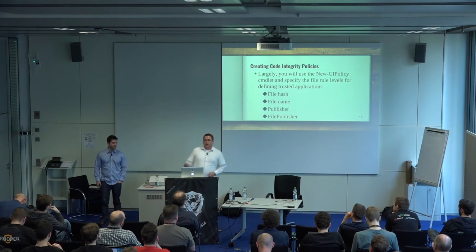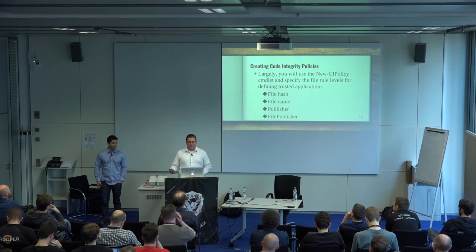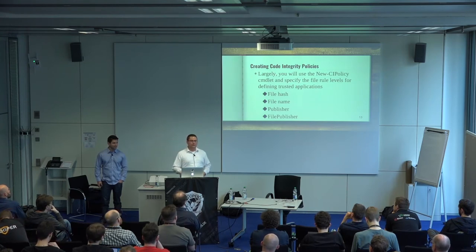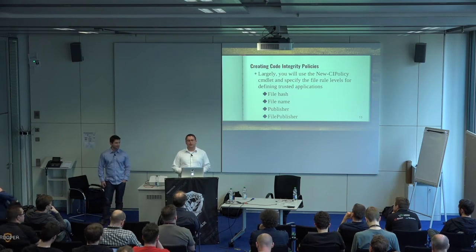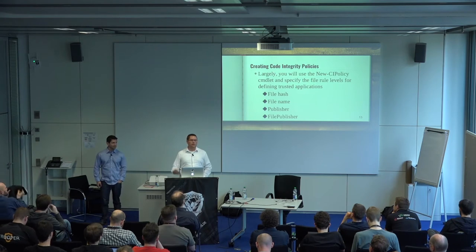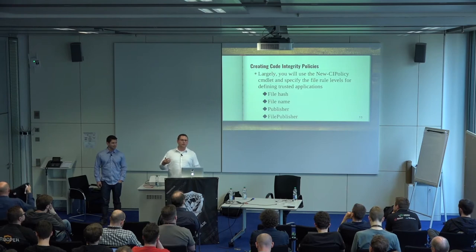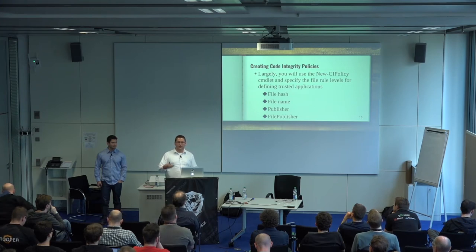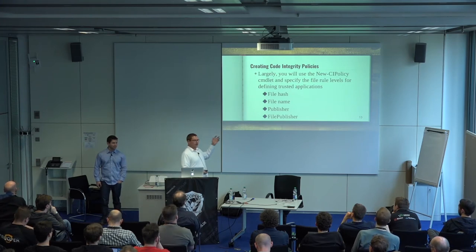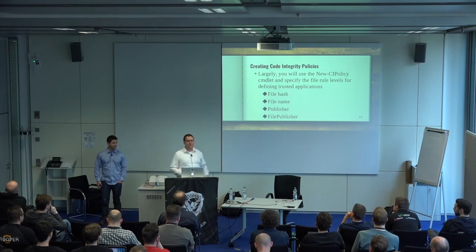The easiest way to create a code integrity policy is using a PowerShell cmdlet called New-CIPolicy. PowerShell will scan your system at a point you specify, whether that be the root of C or creating a volume shadow copy and scanning from that, and it will start creating a code integrity policy. The granularity of the trust decisions depends on how you define the code integrity policy scan.